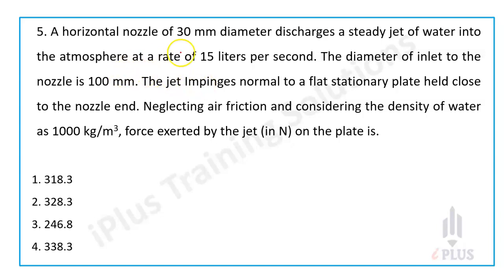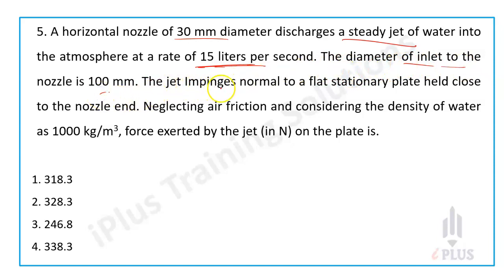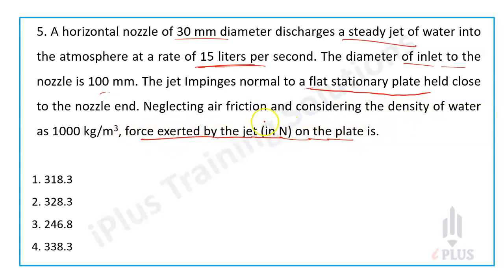Fifth question: A horizontal nozzle of 30 mm diameter discharges a steady jet of water into the atmosphere at the rate of 50 liters per second. The diameter of the inlet to the nozzle is 100 mm. The jet impinges normally on a flat stationary plate held close to the nozzle. Neglecting air friction, with water density 1000 kg per meter cube, find the force exerted by the jet on the plate.